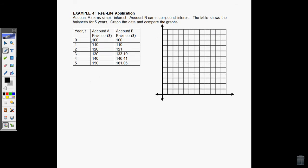Now let's look at our last example here. Account A earns simple interest. Account B earns what's called compound interest. The table shows the balance for 5 years. We want to graph the data and compare the graphs. We want to see if we have some sort of linear relationship, or if there's something different happening with different types. So let's say I graph account A in blue, and account B in red. Okay, so let's put some tick marks on our graph here.